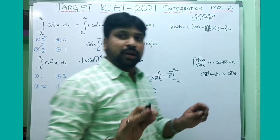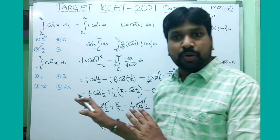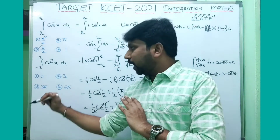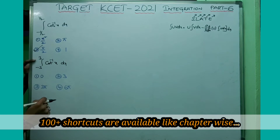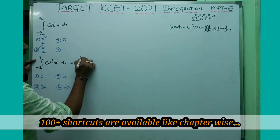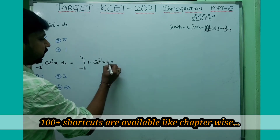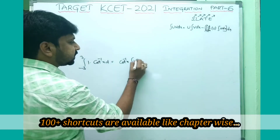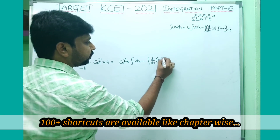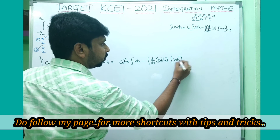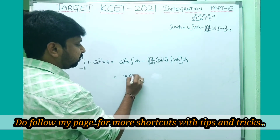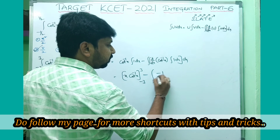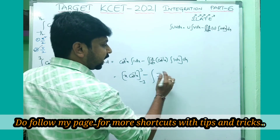This is not too difficult a model. If you have command over integral UV dx you can do this very easily. This question was repeated in 2020 and also in 2019. Now moving to solve the second question — integral from minus 3 to 3 of cot⁻¹x dx. Same logic: write it as integral of 1 · cot⁻¹x dx.